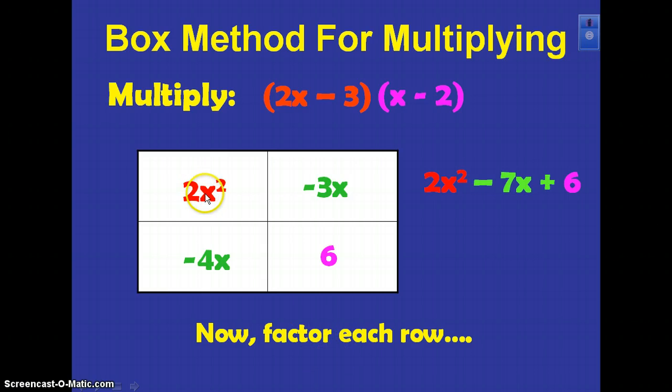Now let's factor each row. 2x squared and the minus 3x. What's your greatest common factor between those two terms? Yeah, it's x. Take a look at this row: between the negative 4x and the 6, what's your GCF? Yep, it's 2. Now let's factor each column. Between the 2x squared and the negative 4x, what's your GCF? Yep, 2x. Let's factor this column. We've got negative 3x and 6. What's your GCF? Yeah, it's 3.